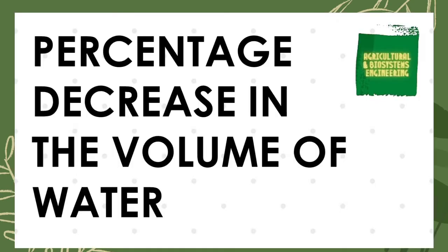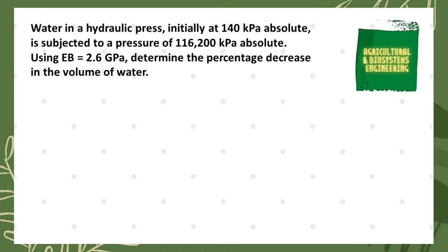To show you how to solve for percentage decrease in the volume of water, I will be solving this problem. Water in a hydraulic press, initially at 140 kPa absolute, is subjected to a pressure of 116,200 kPa absolute. Using bulk modulus of elasticity, denoted by EV, equal to 2.6 GPa, determine the percentage decrease in the volume of water.